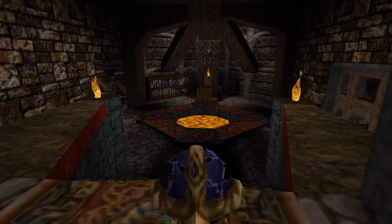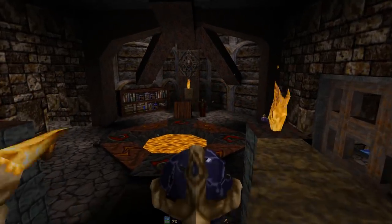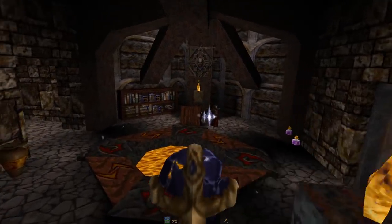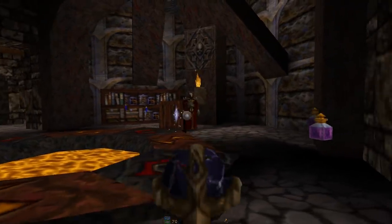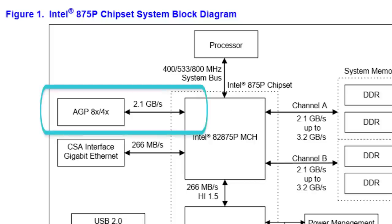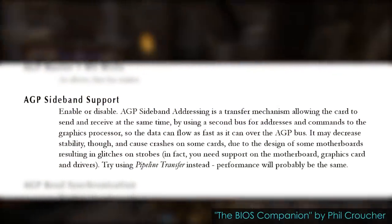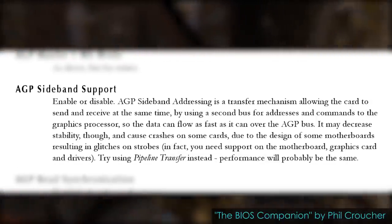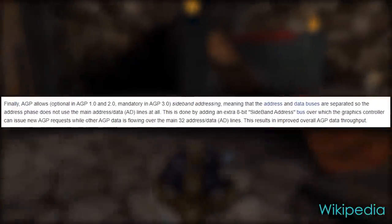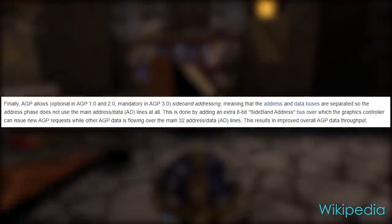AGP isn't actually all that different from PCI in terms of architecture. It does include a number of important changes, however, like giving the graphics card its own dedicated connection to the chipset and CPU, allowing exclusive use of its bandwidth. The other big improvement is sideband addressing, which, while not required in the first couple revisions of AGP, allows bi-directional commands and addressing with a separate 8-bit sideband bus, basically letting commands be issued even while data is filling the other 32 address lines.